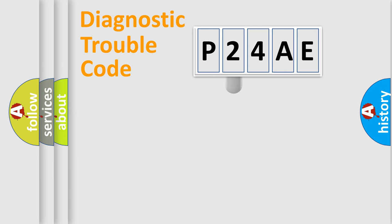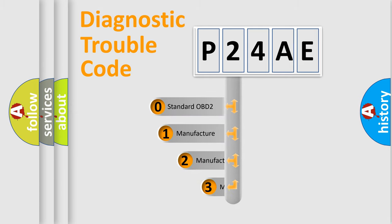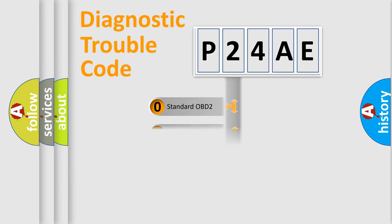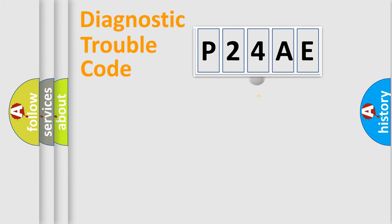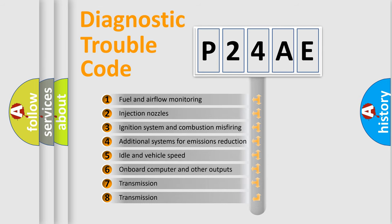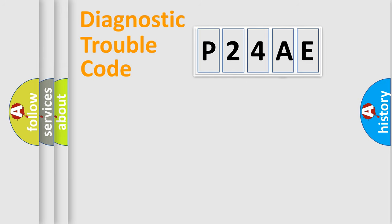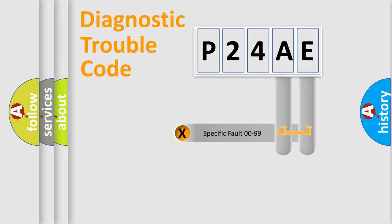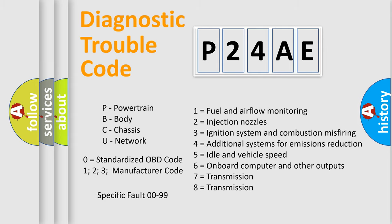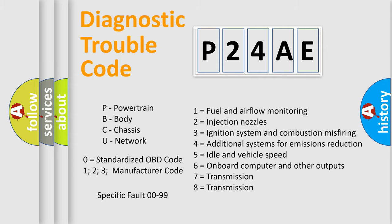This distribution is defined in the first character of the code. If the second character is expressed as zero, it is a standardized error. In the case of numbers 1, 2, or 3, it is a more specific expression of a car-specific error. The third character specifies a subset of errors. The distribution shown is valid only for the standardized DTC code. Only the last two characters define the specific fault of the group. Note that such a division is valid only if the second character code is expressed by the number zero.